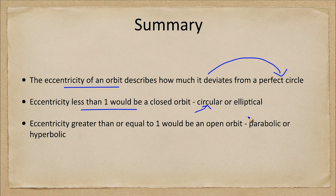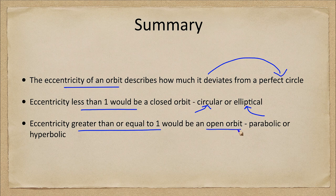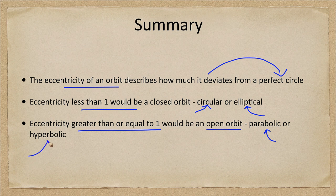If eccentricity is zero it's circular; anything greater than zero but less than one is elliptical. An eccentricity greater than or equal to one gives an open orbit — one that does not return to the same object. Something that comes in and visits the sun once and never comes back, like some comets. Equal to one is a parabolic orbit; greater than one is a hyperbolic orbit.